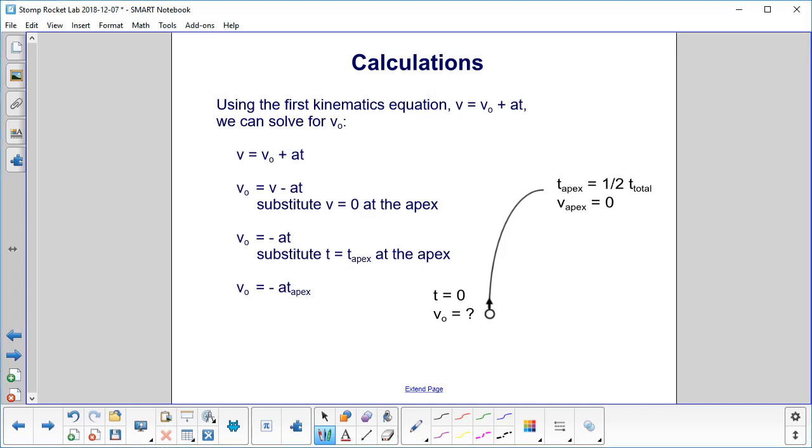We will use the first kinematics equation to solve for v0. So we start with the equation here. We subtract at from both sides, and we get v0 is equal to v minus at. Well, what is v at the apex? Well, it's zero. So that gets rid of this term here. So we now have v0 equals minus at. And at the apex, our time is time apex. So our equation is v0 equals minus a times time at the apex. And time at the apex is half of the total time.